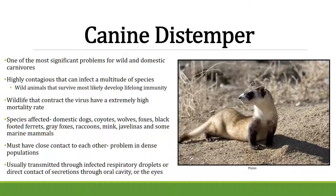Canine distemper occurs in wild and domestic carnivores and is highly contagious. If an animal recovers from it, they build lifelong immunity. However, wildlife that contract it have a high mortality rate. Species affected include dogs, coyotes, wolves, and mink. In dense populations like black-footed ferrets, it's very easy to contract and transmit. It's usually transmitted through infected respiratory droplets, oral cavity, or eyes. Vaccinating your domestic animals is the key prevention.